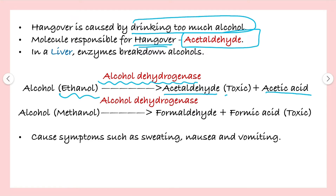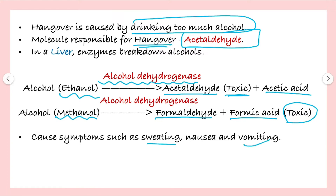Acetaldehyde is very toxic and it causes severe symptoms in the body. Alcohol which contains methanol is also broken down into formaldehyde and formic acid in the presence of the same enzyme. Formic acid is very toxic, and these further cause symptoms like sweating, nausea, and vomiting.